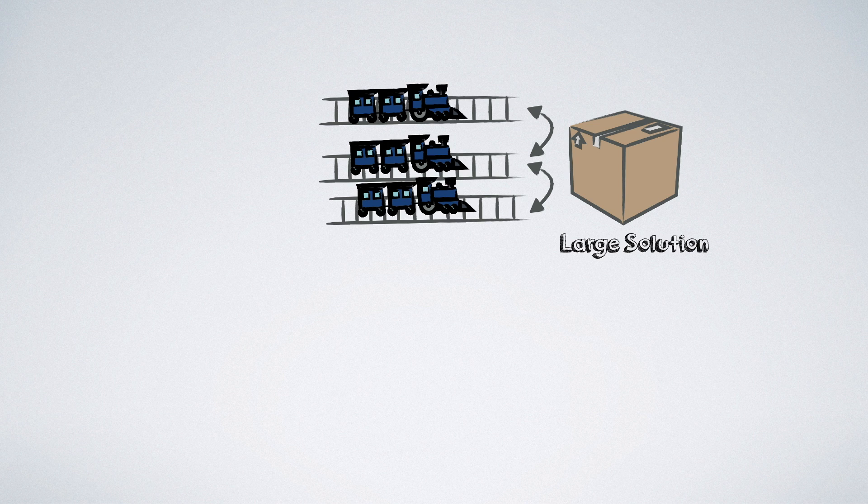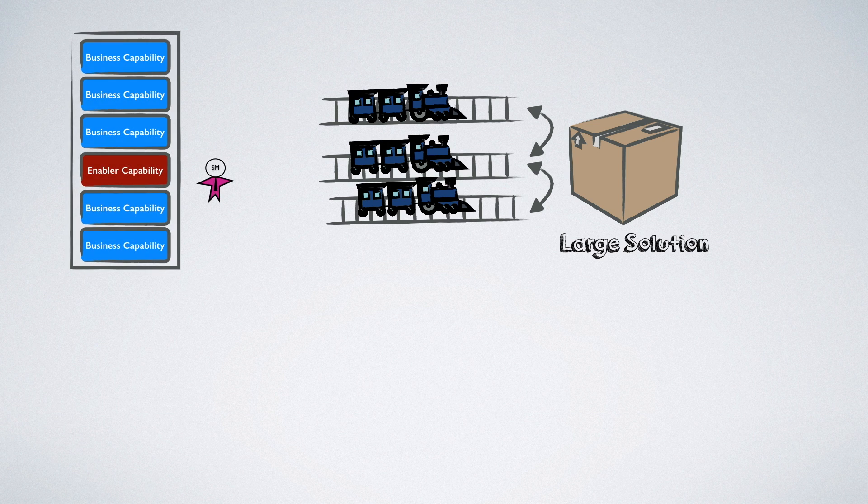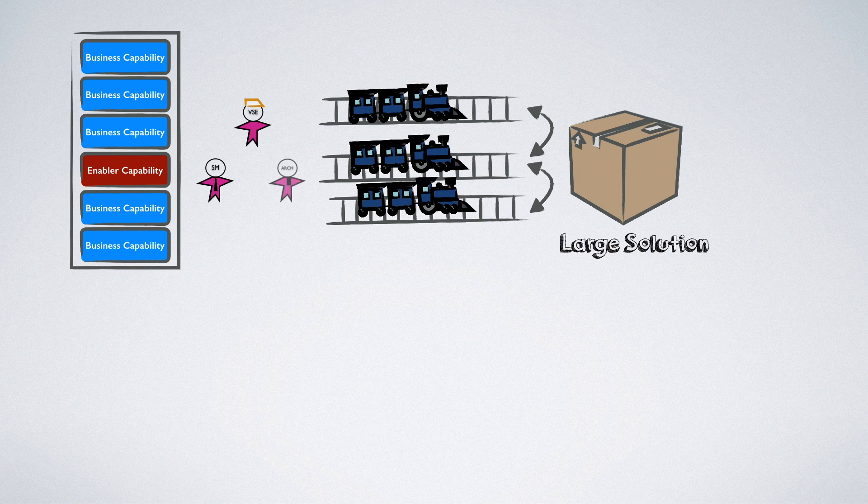The value stream level provides the means to coordinate the ARTs who are building even larger solutions, which a single ART can deliver by itself. At this level, we have solution management as the content authority, the value stream engineer as the coach and guide, and the solution architect to help ensure good architecture is used.